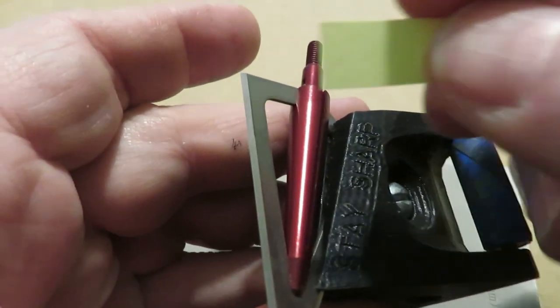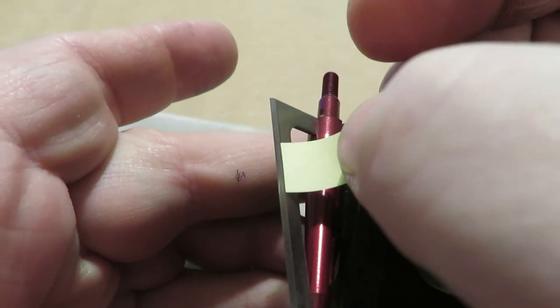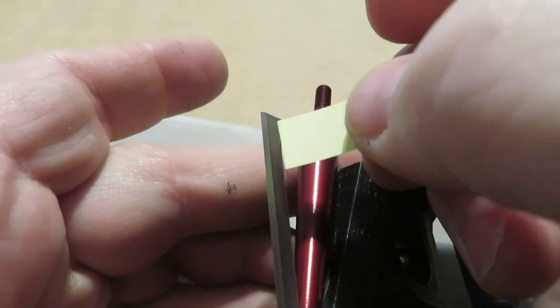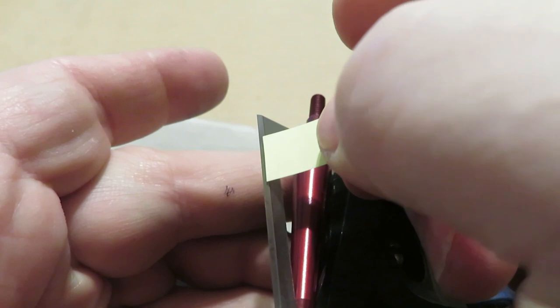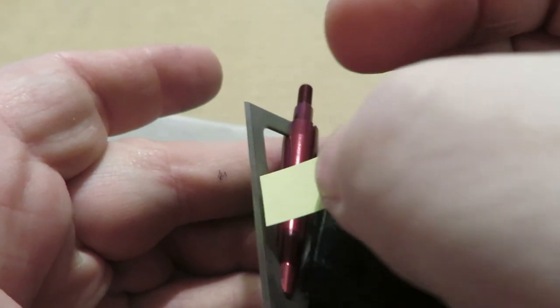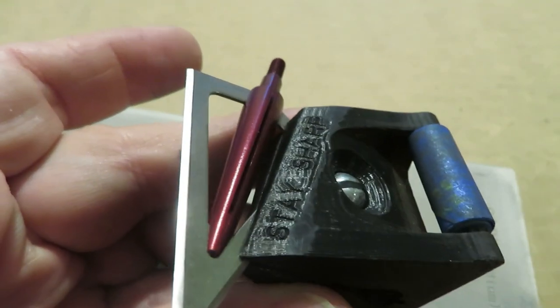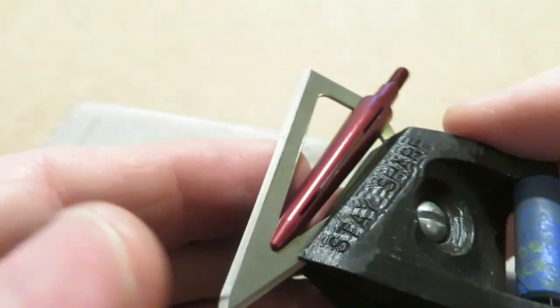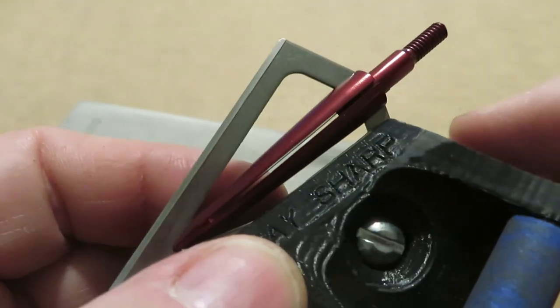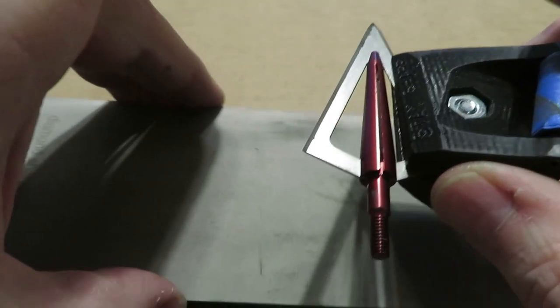If you don't have a burr, now that we've got it all gone, the paper slides right off the bevel. There is nothing for it to hang up on. If you have not achieved a burr, you have not reached the other side of the blade.